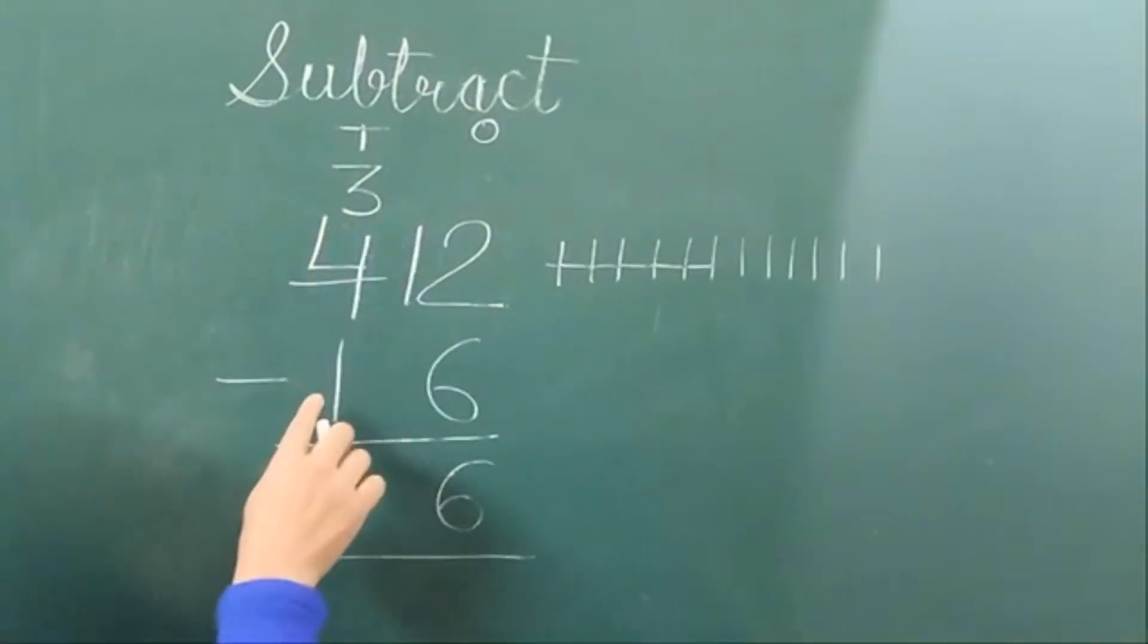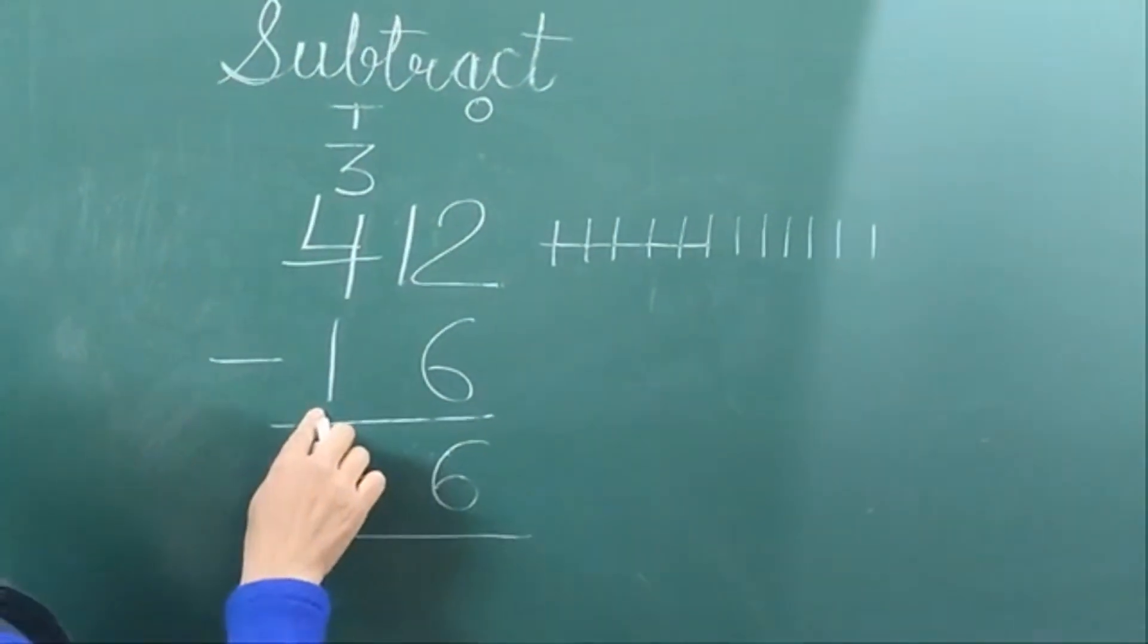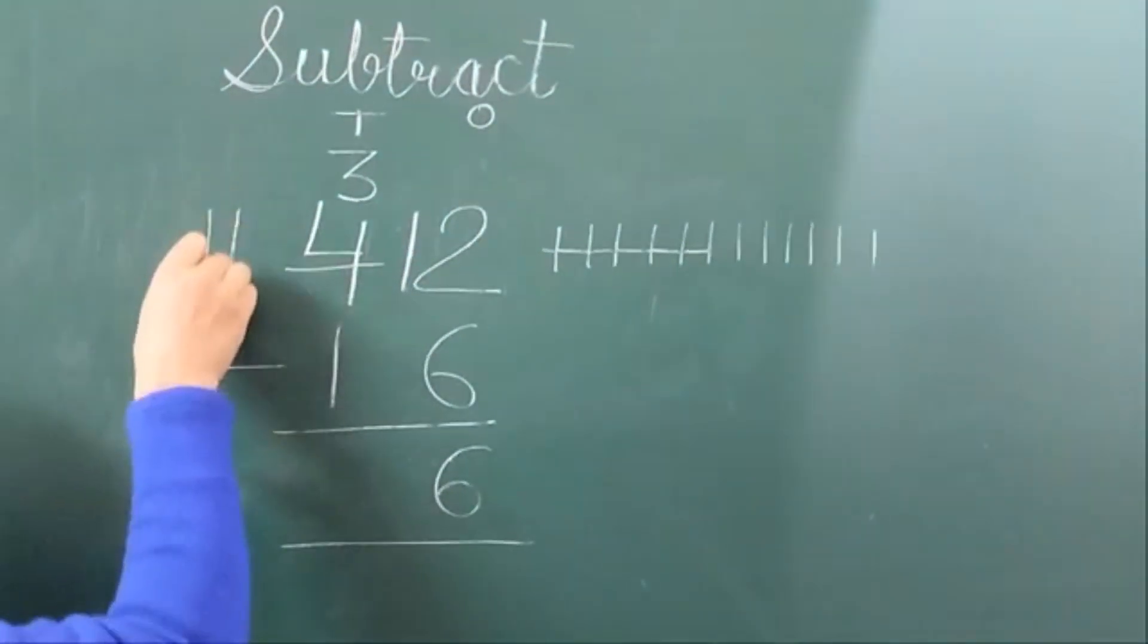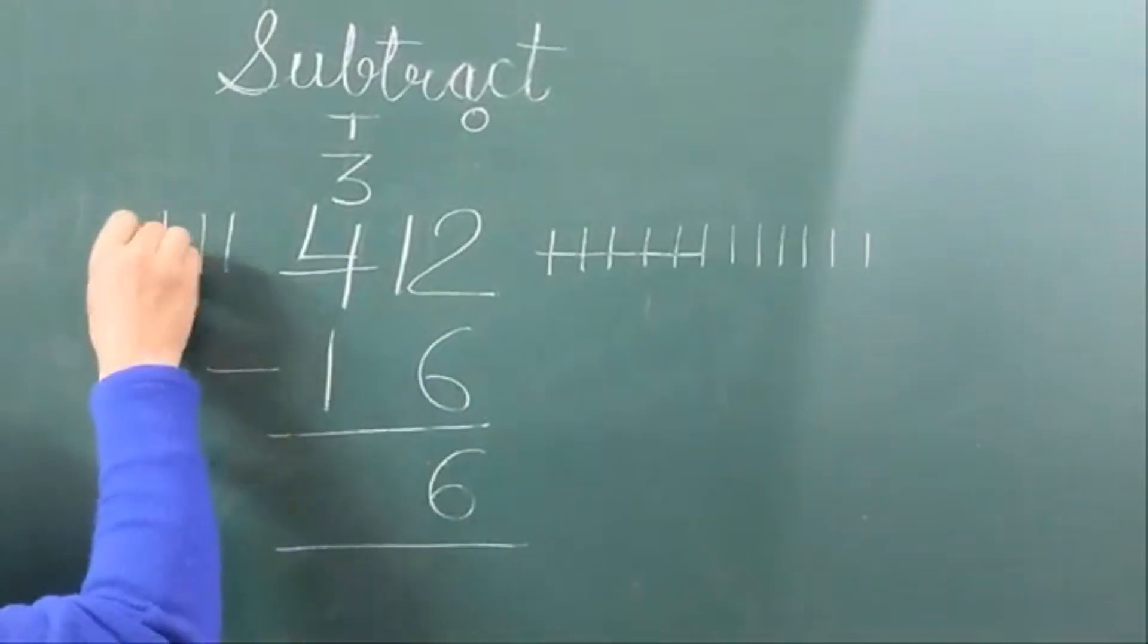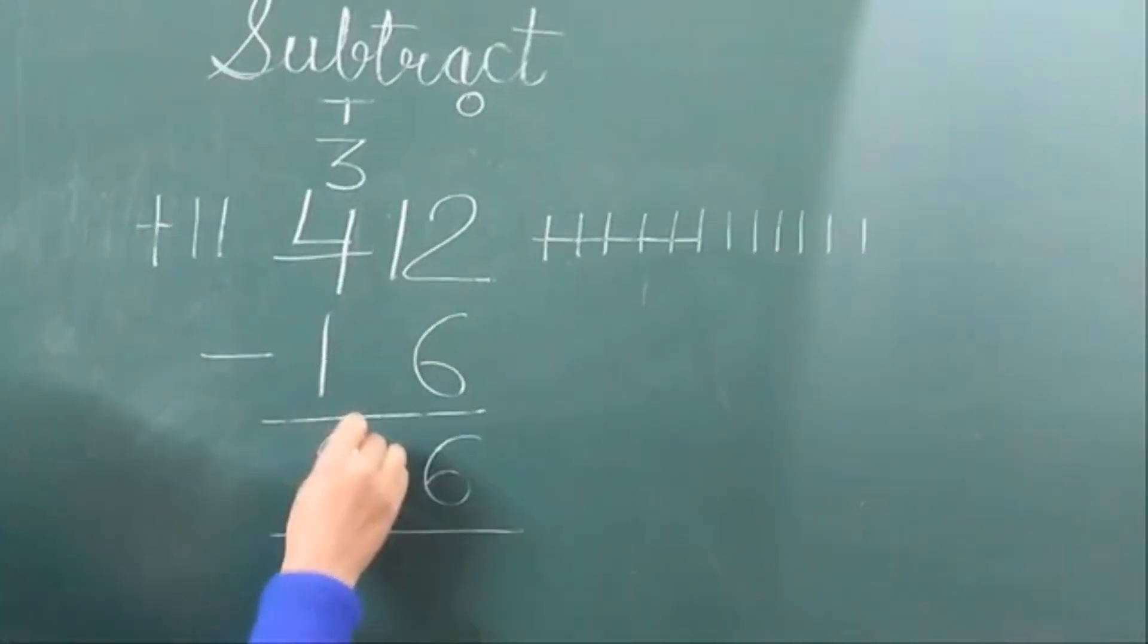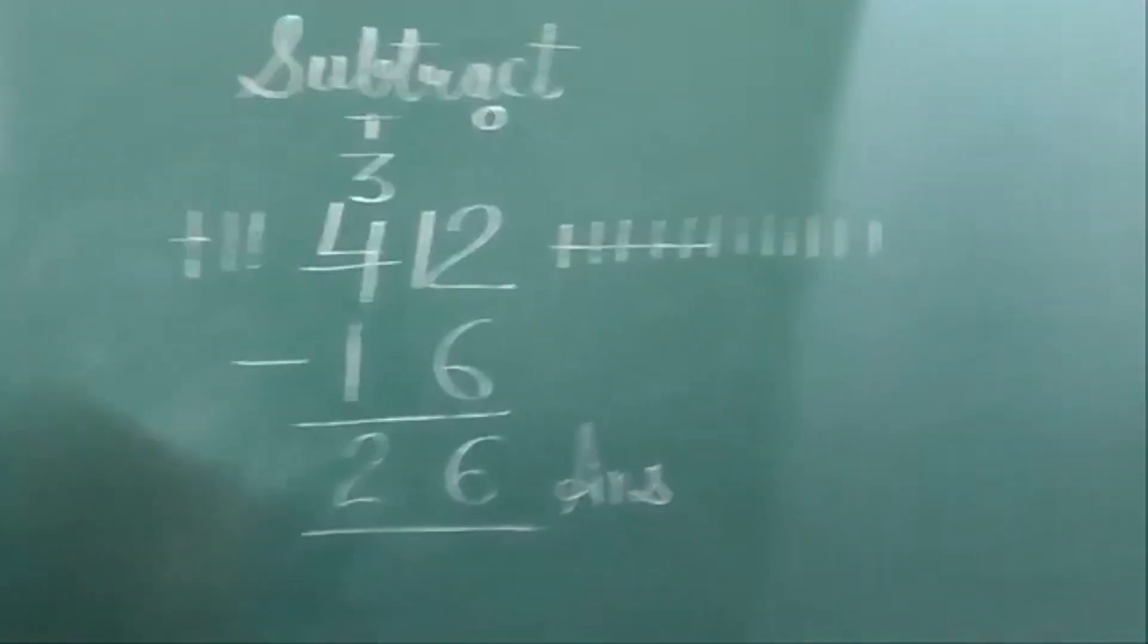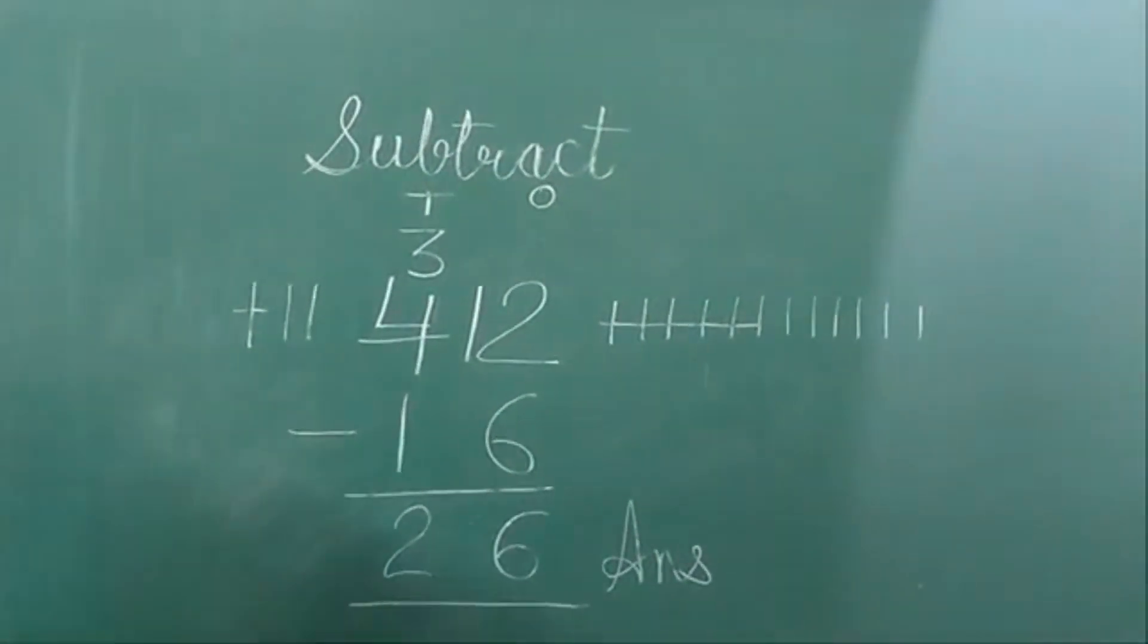3 is given here, and we have to subtract 1 from 3. Draw 3 lines. Cut 1 line. How many are left? 2. So the final answer is 26. I hope this is clear, children. Bye bye.